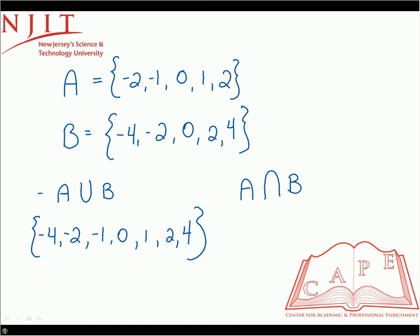For the intersection of A and B, which is with the upside down U, that is specifically elements that both sets have in common.